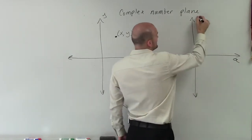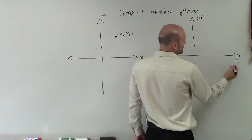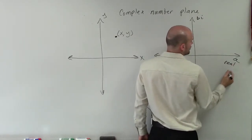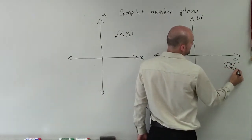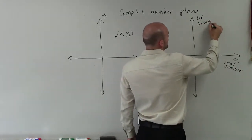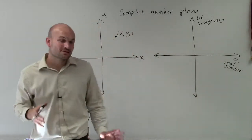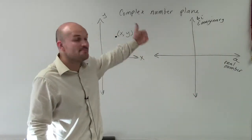We have our a-axis and our bi-axis. So our a-axis represents our real number. And our bi is going to represent our imaginary. OK? So that is going to be our real axis and our imaginary axis.